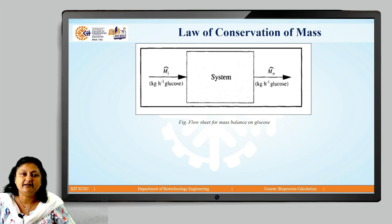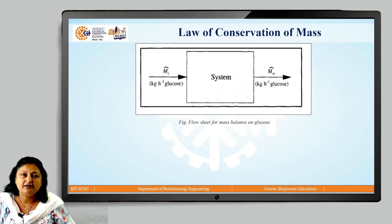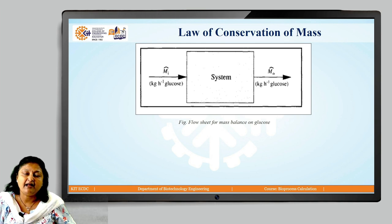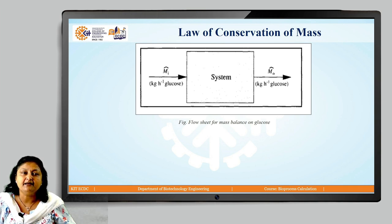Suppose the system has no leak and the measurements of MI and M0 are correct. Then the mass balance equation can be written as: mass in minus mass out plus mass generated minus mass consumed is equal to accumulation. If there is no reaction in the system, then mass generated and mass consumed terms are equal to zero. And if the system is at steady state, then accumulation is equal to zero. In that case, the simple mass balance equation becomes: mass in equals mass out.